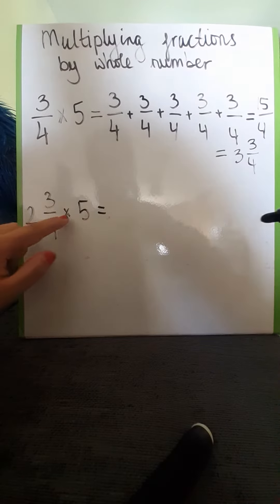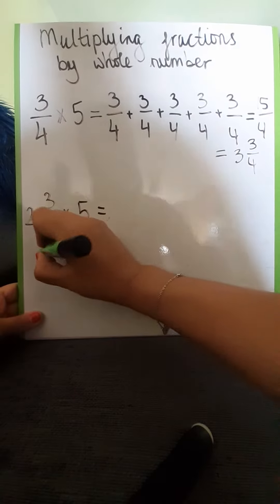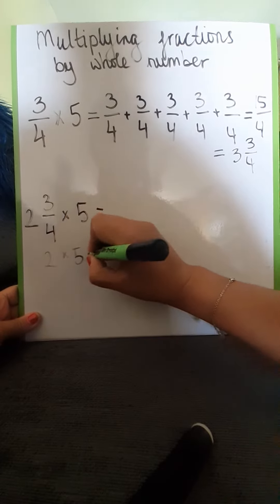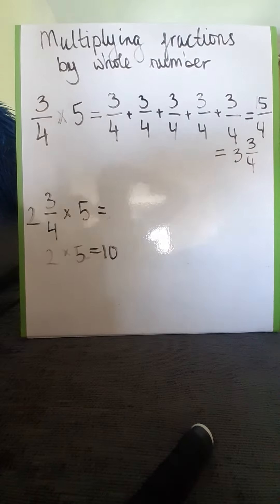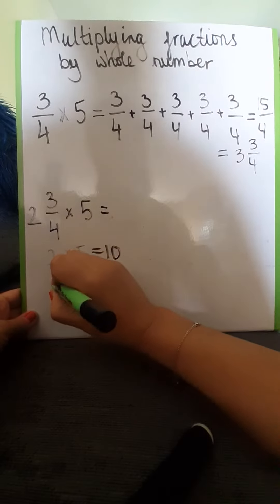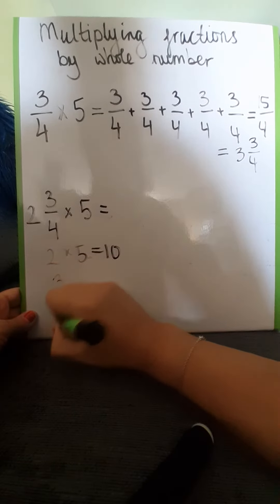So we know that 2 times 5 equals 10 and then we need to just multiply our fraction again.